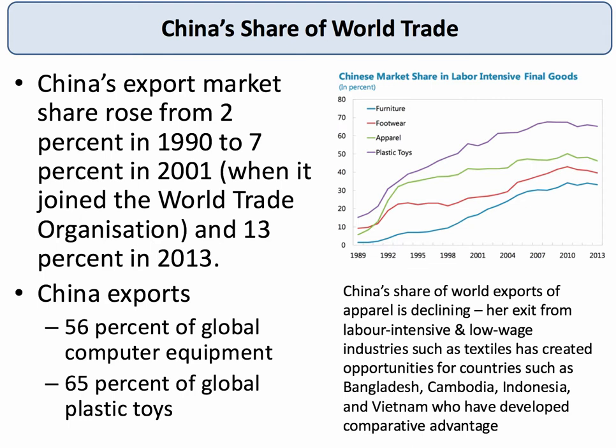For example, last year China exported over half of global computer equipment and nearly two-thirds of global plastic toys. You can see the long-term increase in market share in aspects such as furniture, footwear, apparel, textiles, and plastic toys — China both scaling up and exploiting her comparative advantage in fairly low labour-cost, labour-intensive manufactured goods.